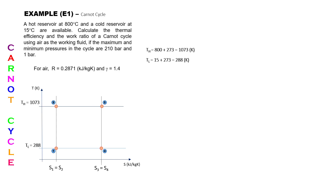Point 1 does not need to be located at any specific corner — you can place point 1 at the top-left corner. Then continuing clockwise, the next points are 2, 3, and 4. Put the arrows in the clockwise direction as well, so the cycle proceeds clockwise on the TS diagram.